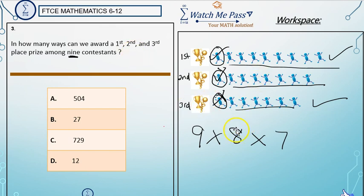So to answer the question, you multiply nine times eight times seven, and you'll find that it's 504. And now you're an expert.